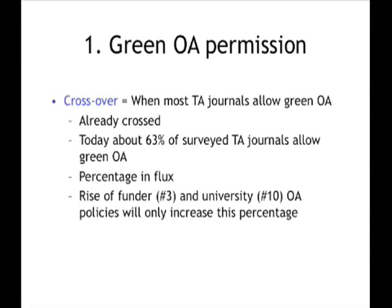A slightly larger number will permit green open access on request — they just don't give blanket permission in advance. We can talk a little bit about why this percentage is in flux. Some new journals are deciding to add permission, while there seems no doubt that some journals are rescinding previous permission. It's also the case that the service surveying journals is adding new journals that had never been surveyed before, and some of those do allow it and some don't. All these together explain the fluctuation. I'll talk later about funder and institutional policies which require deposit into open access repositories — they are bound to increase the percentage of journals that permit this well above 63%.